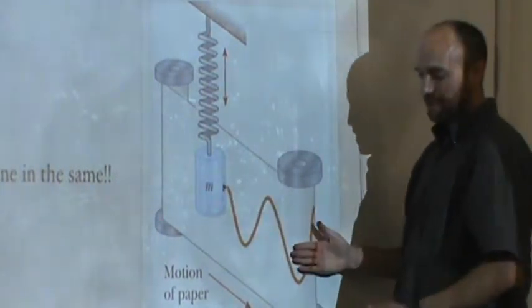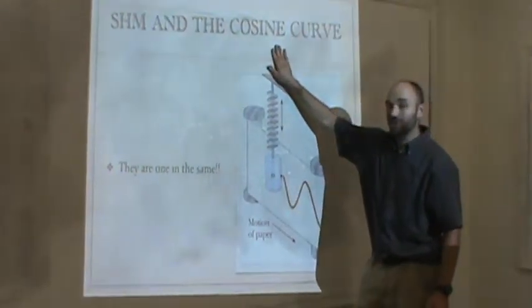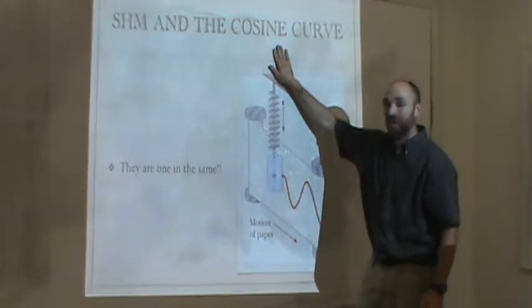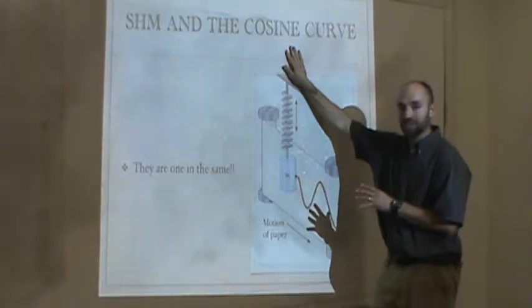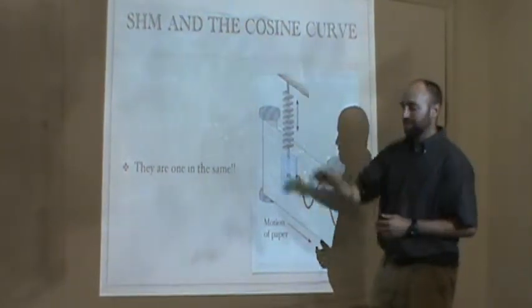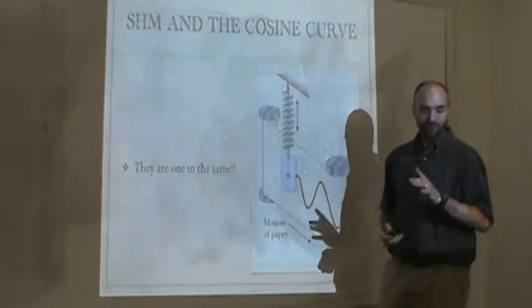It's going to draw a perfect sine curve. So what I'm saying is that simple harmonic motion and cosine curves are the same thing. They go hand in hand. And so we can use this idea to describe waves. I'll show you more about that in a second.